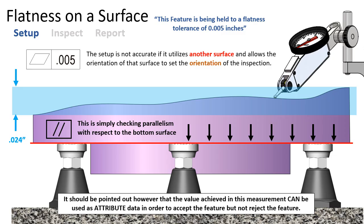It should be pointed out that the value achieved in this measurement can be used in an attribute way to accept the feature, but we cannot reject this feature based on this value. In other words, if we drag the indicator across that surface and get a value of less than five thousandths, we can accept it for flatness. However, if we get a value of more than five thousandths, we cannot necessarily reject that for flatness.